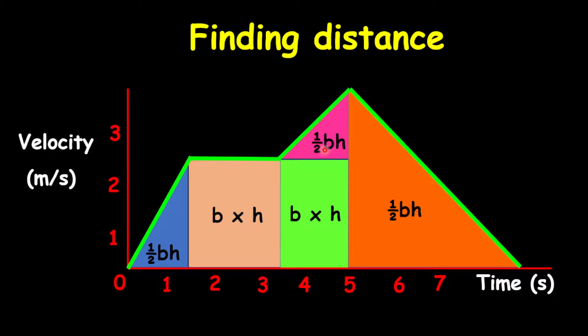I want to point out something here. This half base times height and this base times height are representing the distance covered when the car is accelerating at this point. This is the second acceleration here. And then the entire orange triangle is representing the deceleration part. This is representing only when it's moving with constant velocity or uniform velocity. And this is for the first acceleration.